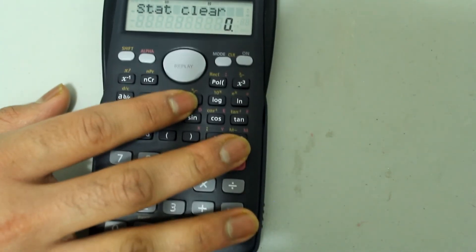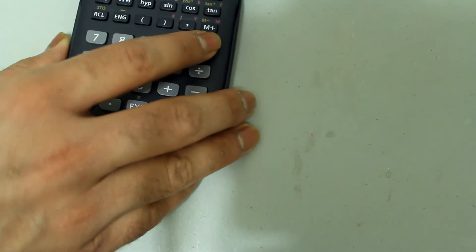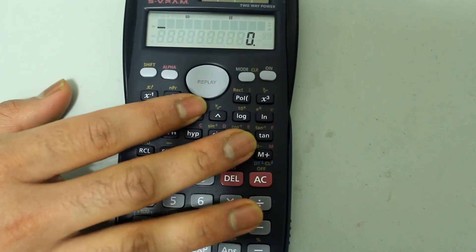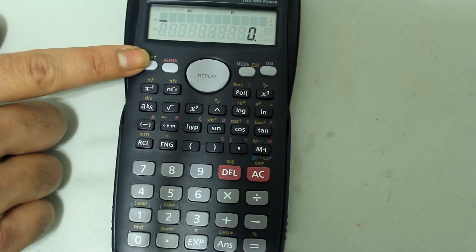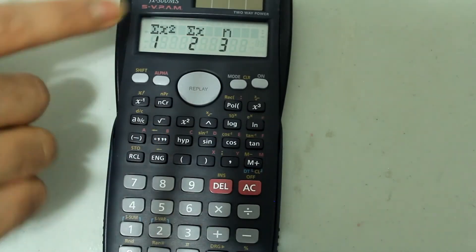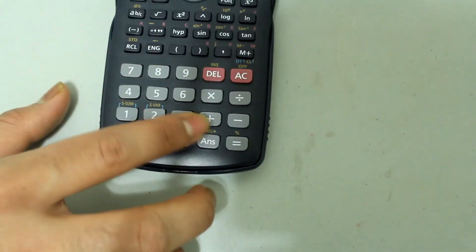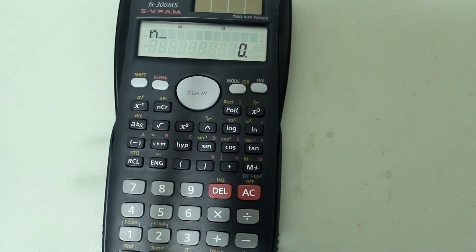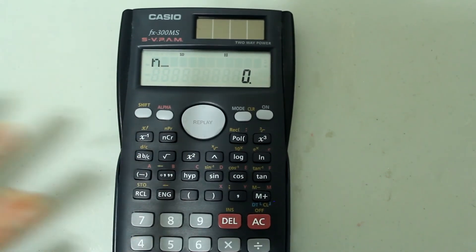This stays on the screen. So now just press all clear. So now if you wanted to check if anything was entered, press shift, press S sum, and select number 3. It tells you there is zero pieces of data entered. So every piece of data has been cleared from the stored data.